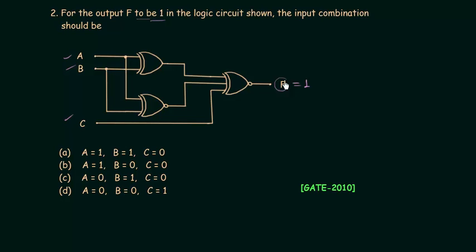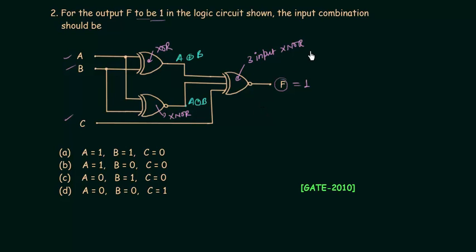First we need to find the expression for F. The circuit has three gates: a two-input XOR gate, a two-input XNOR gate, and a three-input XNOR gate. The output of the XOR gate is A XOR B, and the output of the XNOR gate is A XNOR B. These feed into the three-input XNOR gate along with input C.